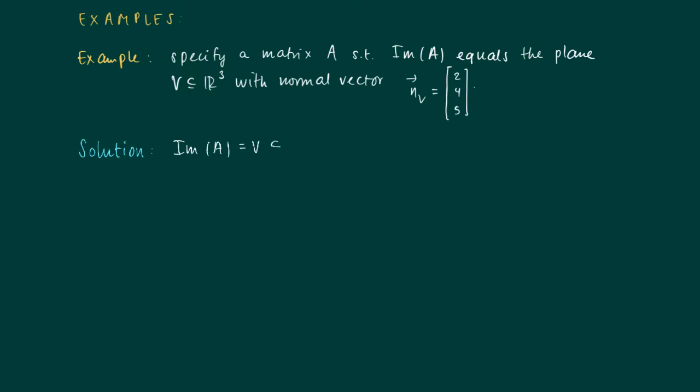Well, since the image of A is a plane V as part of R³, we know that A is a 3 times M matrix. So it has 3 rows. Why is that? Well, we know that the image of the matrix A is a span of its columns.